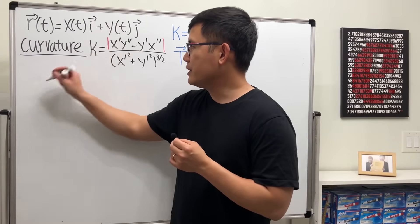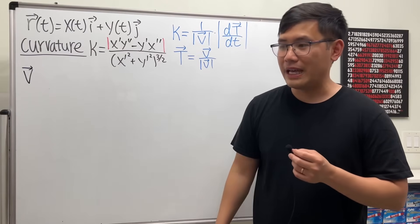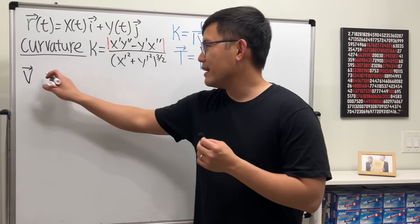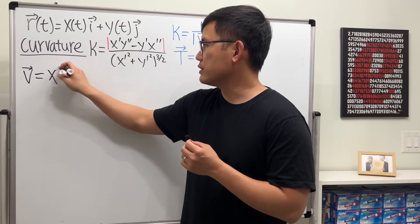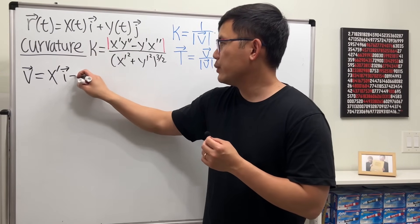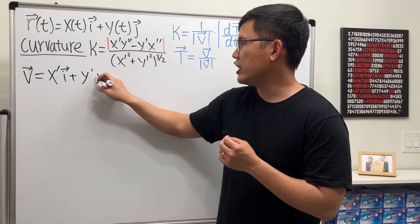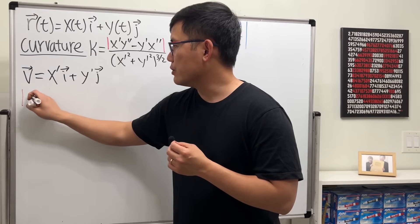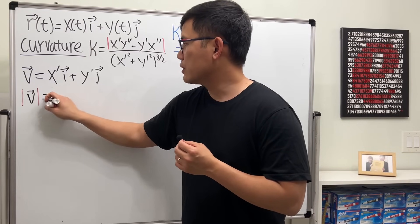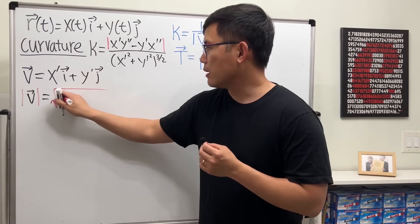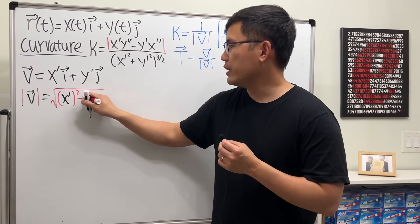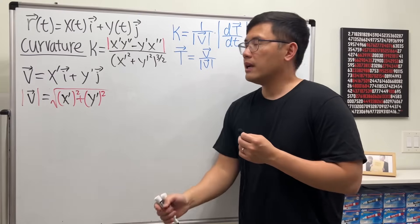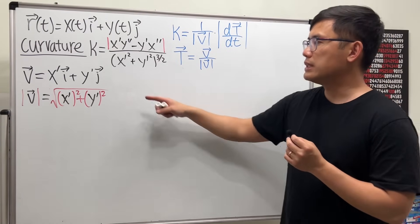First, get the derivative — I'll write this as v with an arrow, omitting the parentheses t to keep things clean. This equals x-prime i plus y-prime j. Next we need the magnitude, so the magnitude is the square root of the first component squared, x-prime squared, plus the other component squared, y-prime squared.